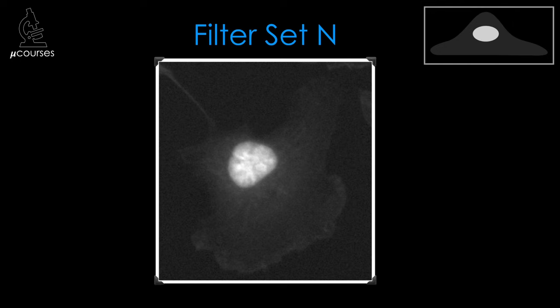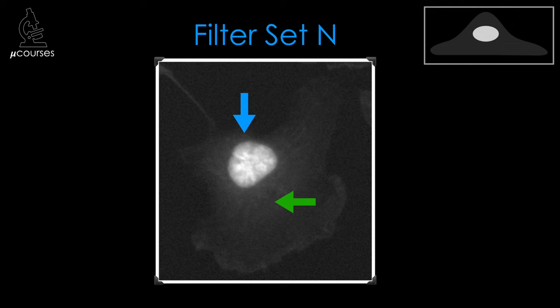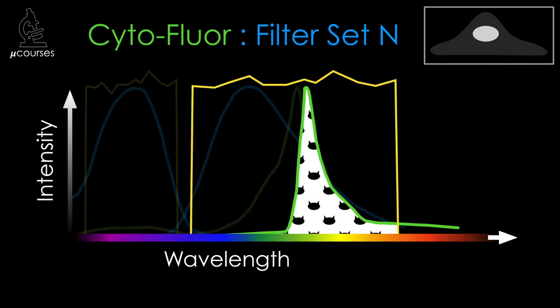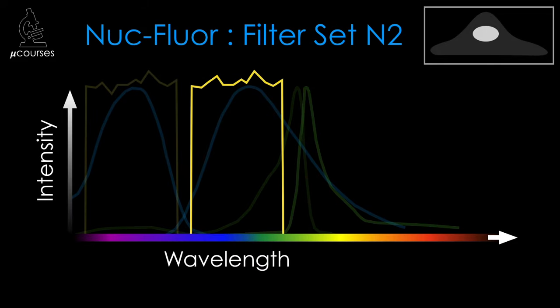And sure enough, if we collect an image of our specimen using filter set N, we see signal in the nucleus as expected from nukeflor, but we also see signal in the cytoplasm where cytoflor localizes. If we collected an image with filter set N and assumed all signal came from nukeflor, we would incorrectly conclude that nukeflor localizes to the cytoplasm as well as the nucleus.